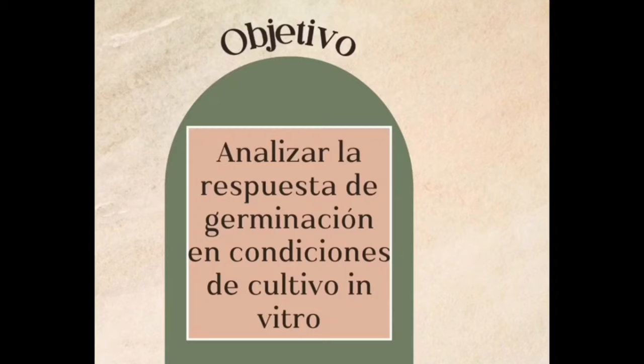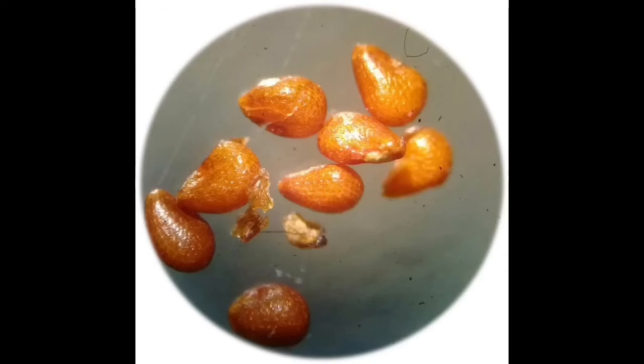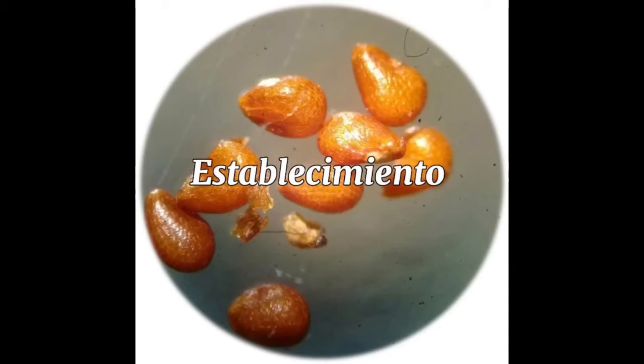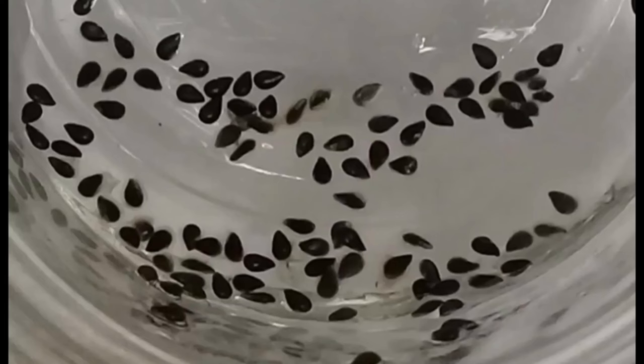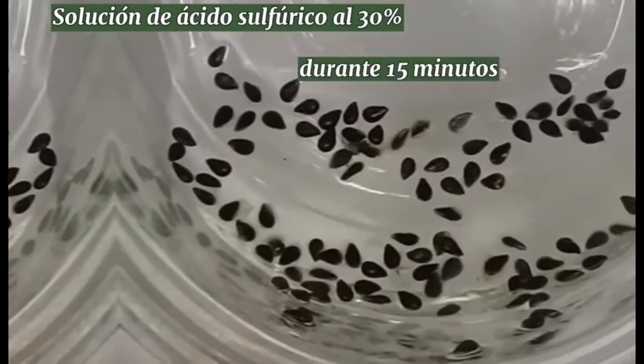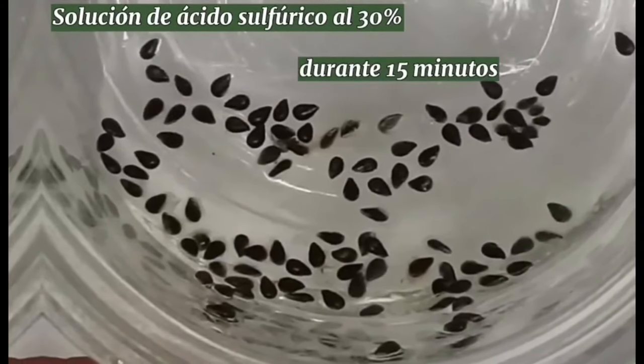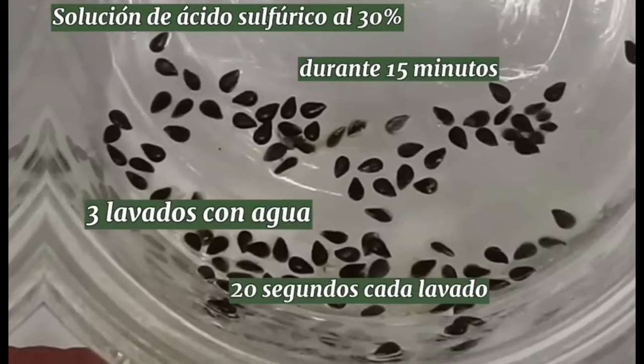El objetivo fue analizar la respuesta de germinación en condiciones de cultivo in vitro de Mammillaria decipiens y Mammillaria nivosa. Para su establecimiento se inició con la selección del explante, el cual consistió de semillas de ambas especies. Previo a la siembra fueron colocadas en una solución de ácido sulfúrico al 30% por 15 minutos. Se retiró la solución y se realizaron tres lavados con agua corriente para retirar el exceso de ácido.